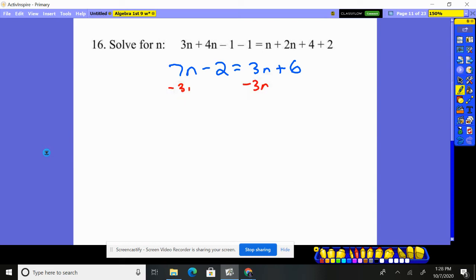I'm going to move the smaller variable in this situation. It doesn't matter. You can move whoever. As long as you get all the numbers on one side, all variables on the other. I like to get my variables on one side, then get my numbers on the other. 4n minus 2 equals, that goes away, 6.